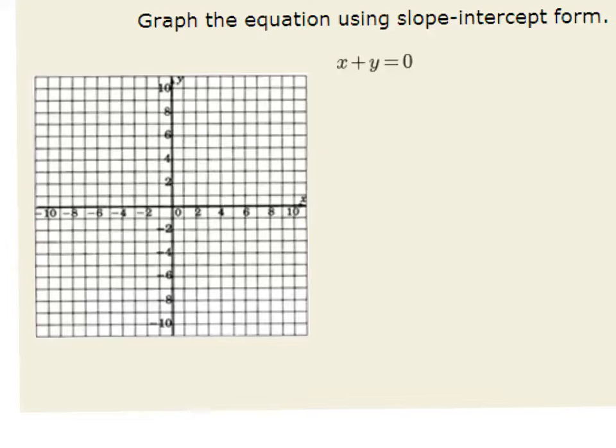Graph the equation using slope-intercept form. We know from previous examples that slope-intercept form is y equals m, our slope, times a given x value, plus b.